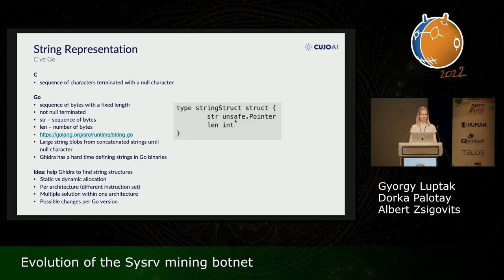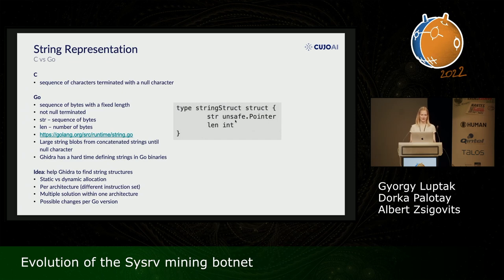The answer is that Go handles strings in a very different way than C. In C, strings are a sequence of characters terminated with a null character. But in Go, there is a specific string structure consisting of two things: first, a pointer to the beginning of the string, and then an integer showing the length of the string — with no null termination. In many cases, these small strings are concatenated together and stored as a large string blob within the binary, so there is no easy way to differentiate where one string ends and the other starts. That is why Ghidra also has a hard time defining these strings within Go binaries.